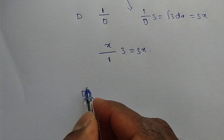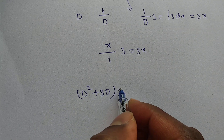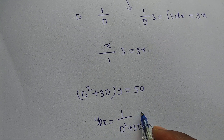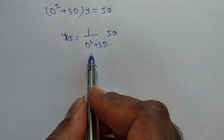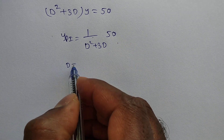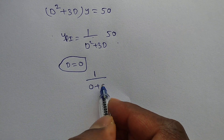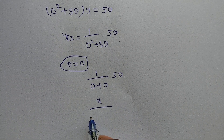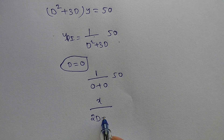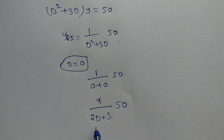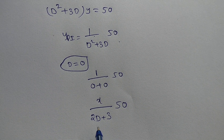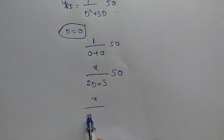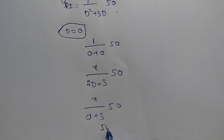One more problem: (D²+3D)·y = 50. PI = 1/(D²+3D) · 50. Since 50 is constant, put D = 0: denominator = 0+0 = 0, so we apply the formula. Write x in numerator and differentiate the denominator: derivative of D²+3D is 2D+3. Put D = 0 again: x/(0+3) · 50 = 50x/3.